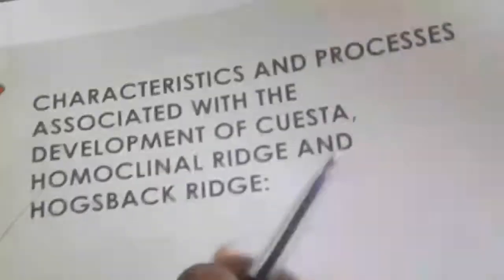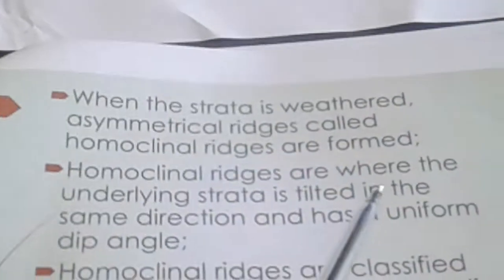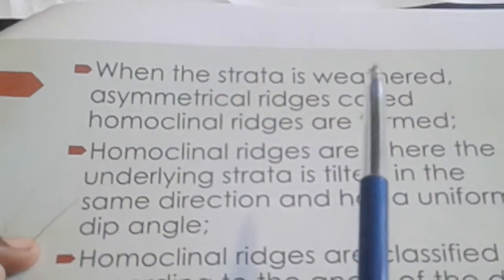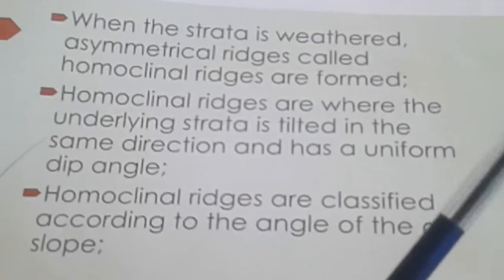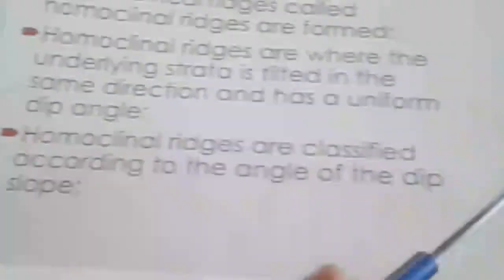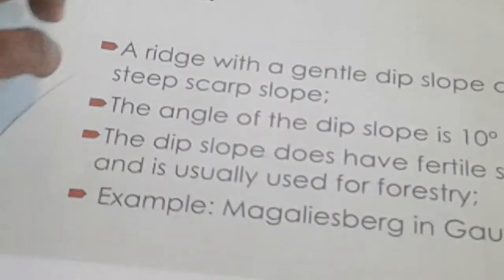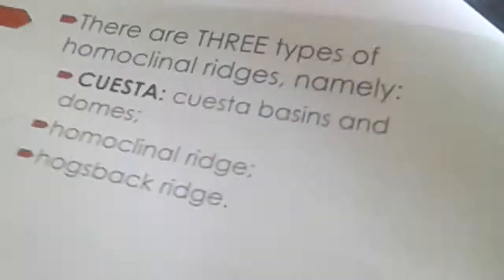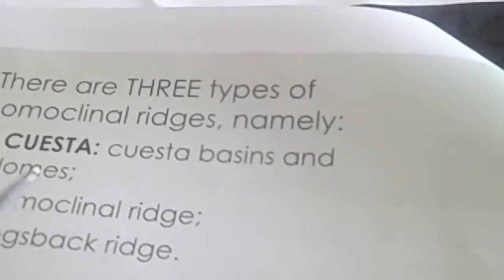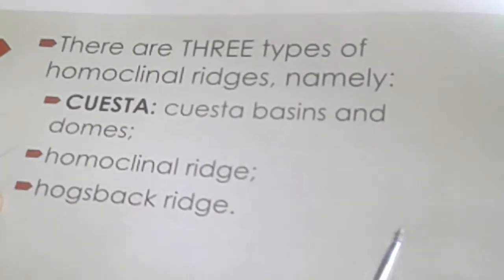When looking at the characteristics and processes associated with the development of homoclinal regions and hogsbacks, one key characteristic is the dip slope and scarp slope. Inclined strata landforms are referred to as homoclinal landscapes, and they are classified according to the angle of the dip slope. There are three types: the cuesta, the homoclinal ridge, and the hogsback ridge.